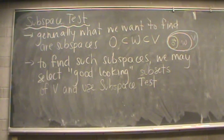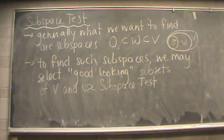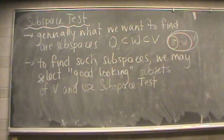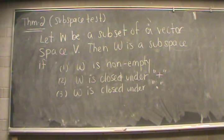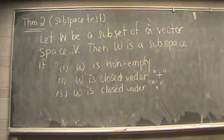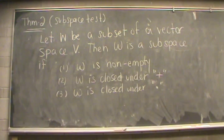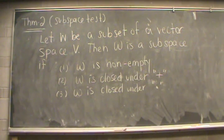The zero space by itself is kind of boring. What we usually want to find are proper subspaces — subspaces somewhere in between the zero space and the vector space V. To find these, we select some good-looking subsets of V and apply the subspace test. W is a subspace if three conditions hold: first, W is non-empty (we usually show the zero vector is inside W); second, W is closed under addition inherited from V; and third, W is closed under scalar multiplication from V.